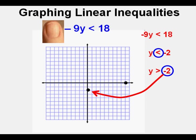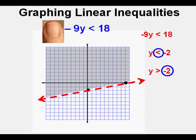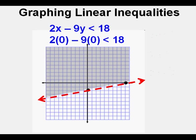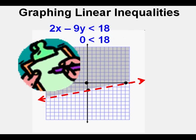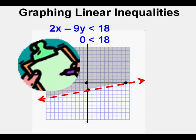Now we draw the boundary line. Since it is greater than (after flipping the sign), that would be a dashed line. Greater than means up, so we shade above the boundary line. Using (0, 0) to check: 2 times 0 minus 9 times 0 on the left. Is 0 less than 18? Yes. And since (0, 0) is in the shaded area of the graph, we know that we have shaded correctly. Check.